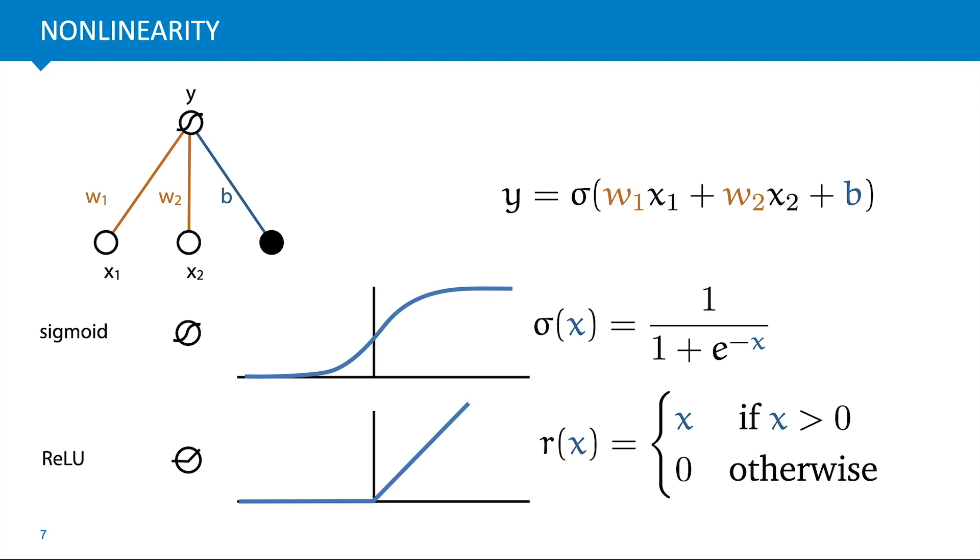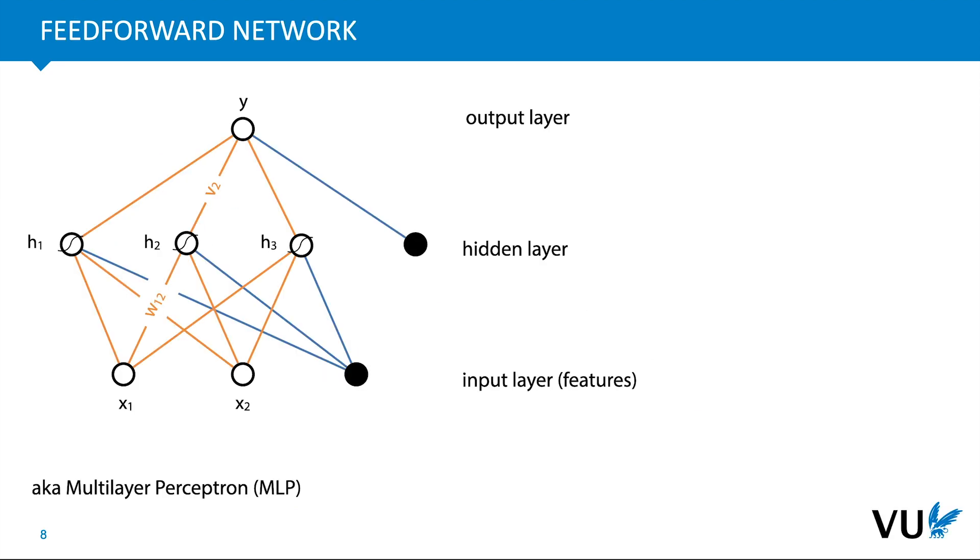So with these non-linearities in place, we can build a network, chain together these perceptrons. The simplest way is what's called a feed-forward network. We take a bunch of nodes and arrange them in layers. The first one is the input layer, which are the input values we feed to the network. The middle one is the hidden layers, the values computed by the first set of perceptrons. Then we go to the output layer, which is one single perceptron that computes the output based on the values in the hidden layer.